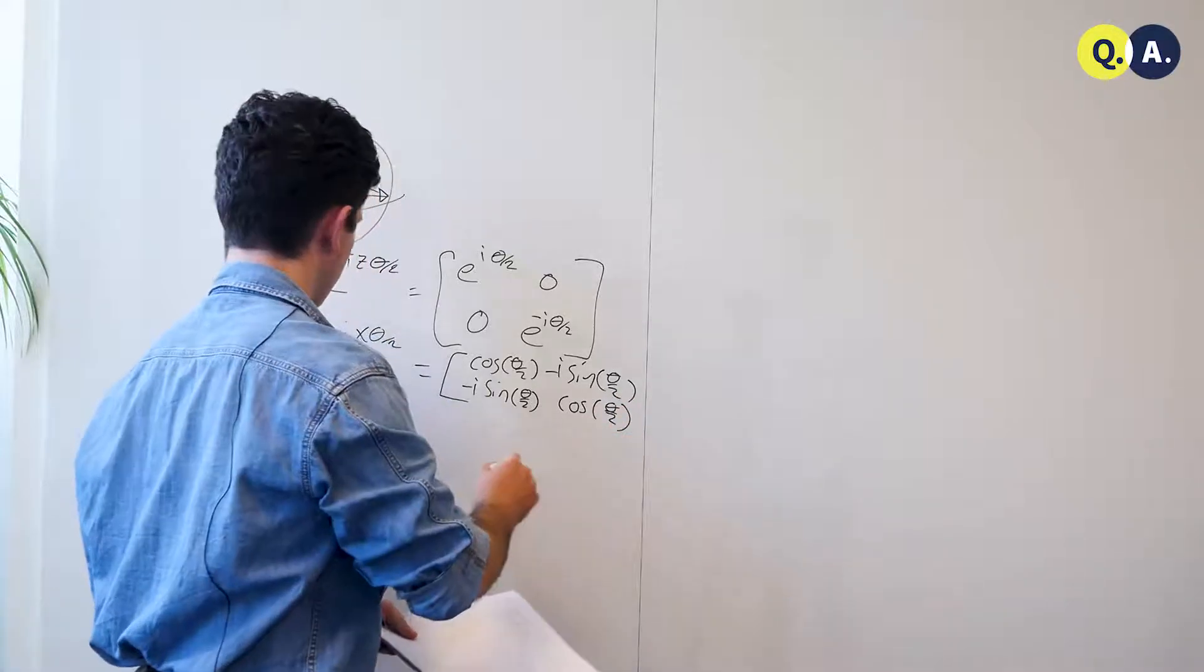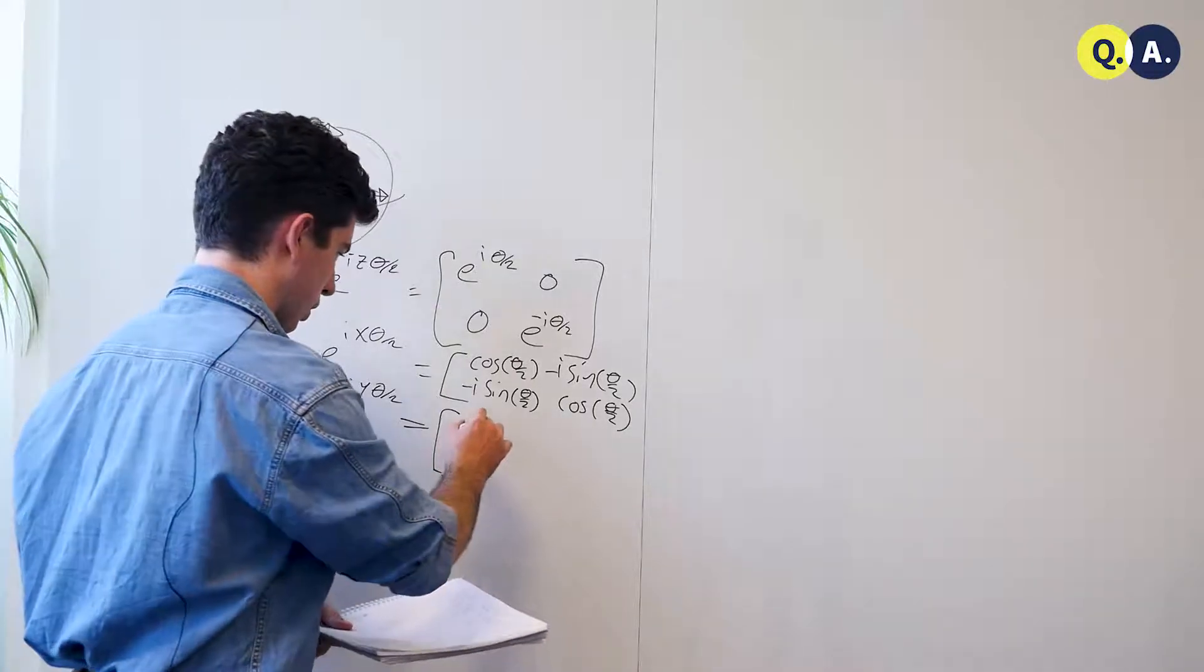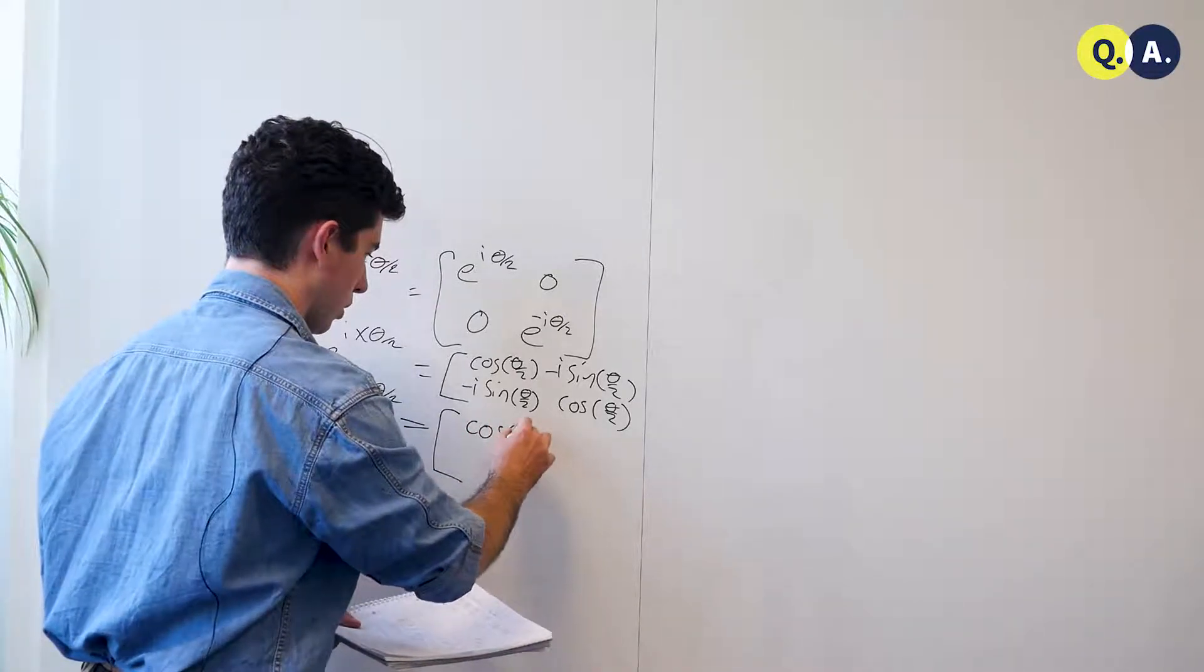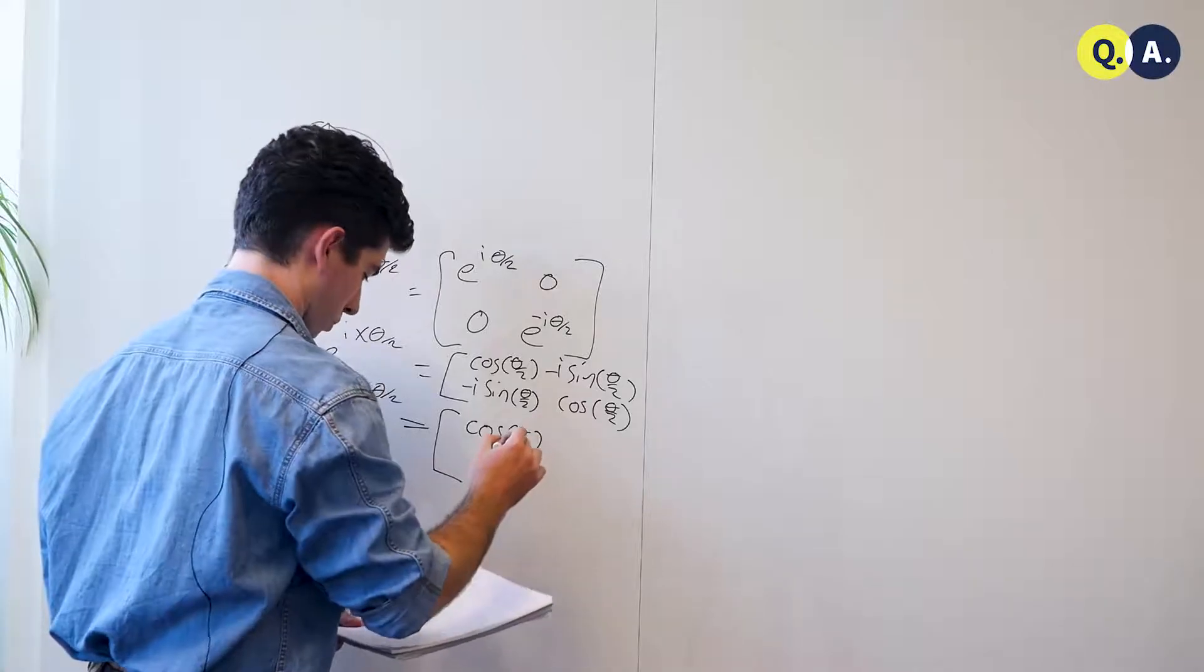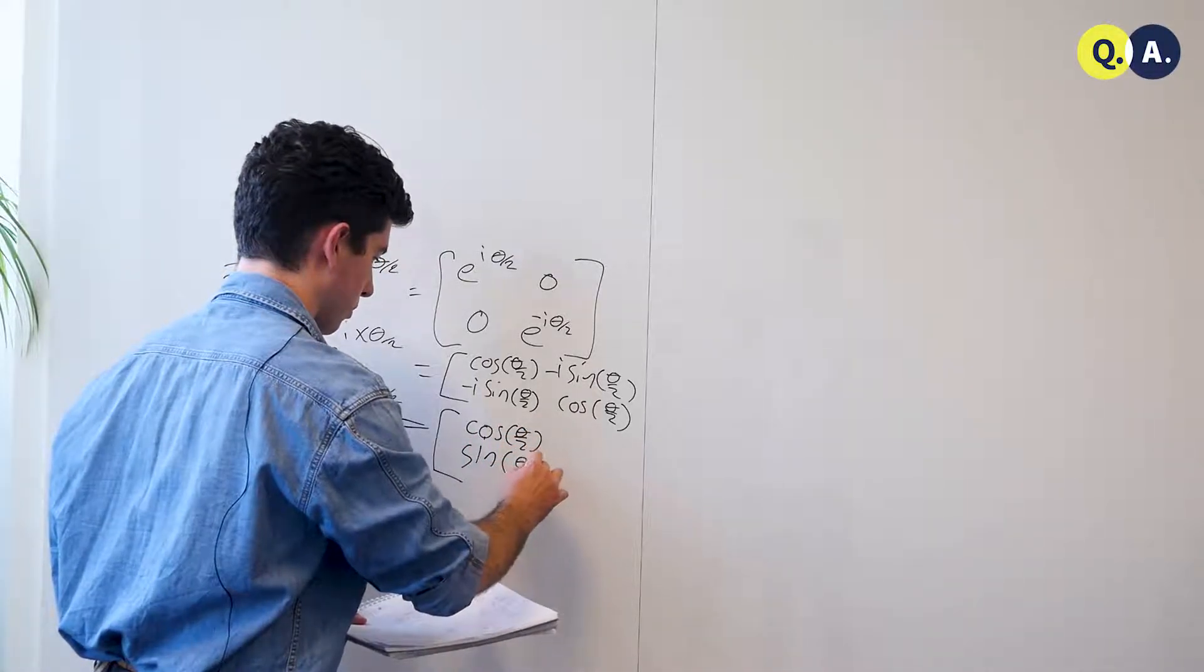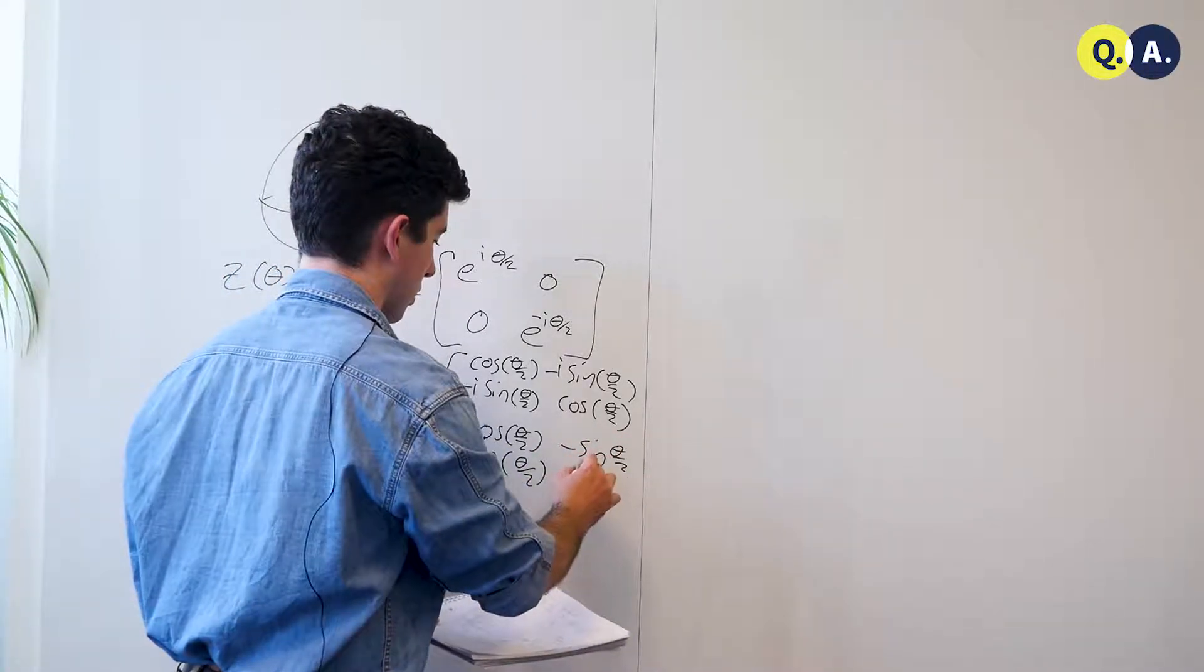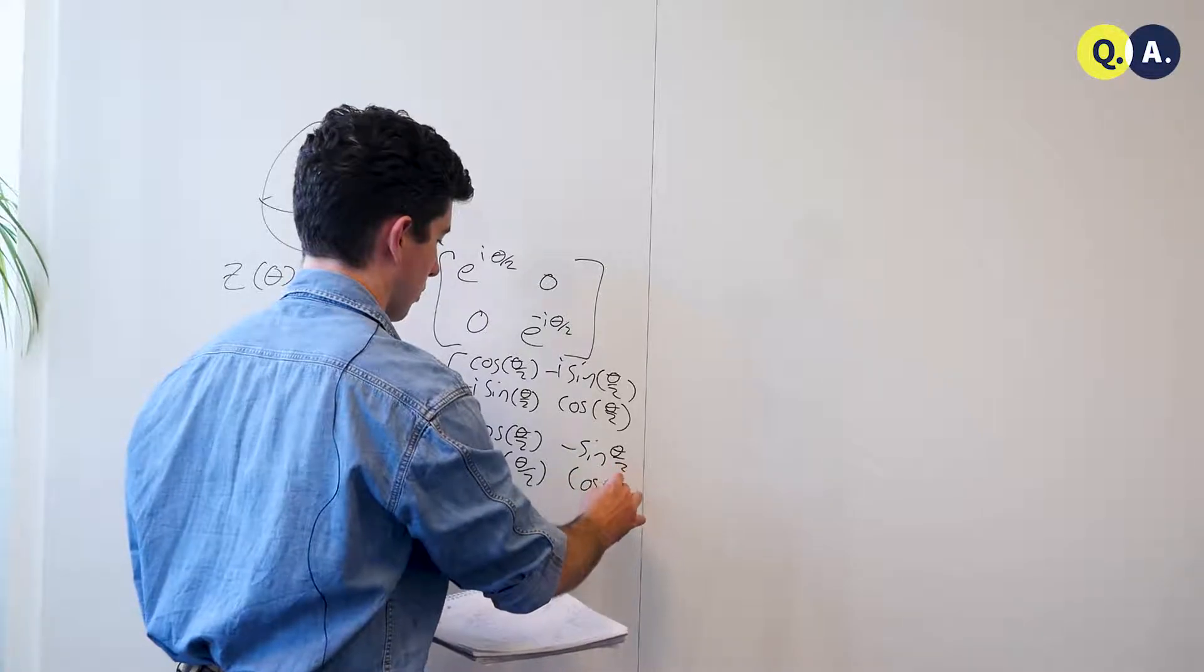E to the i y theta over 2 is quite similar, cosine theta over 2, sine theta over 2, minus sine theta over 2, cosine theta over 2.